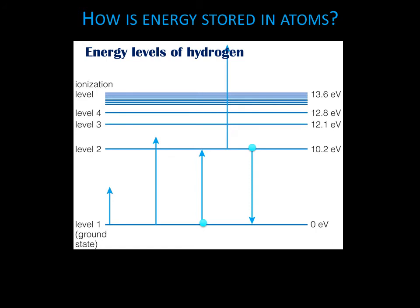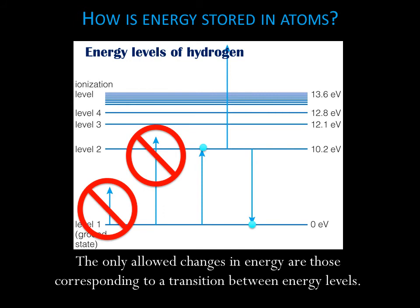An electron can move from a lower energy level to a higher one, like this, or it can go from a higher level to a lower one, like this. But an electron cannot go in between levels. The only allowed changes in energy are those corresponding to a transition between energy levels.